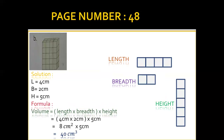Part B of question 4: the right side of the cuboid shows 2 boxes — breadth is 2. In the front horizontal layer you can see four boxes — length is 4. Counting the layers vertically: 1, 2, 3, 4, 5 — height is 5 cm. Applying the formula: length 4 cm × breadth 2 cm × height 5 cm = 40 cm³.